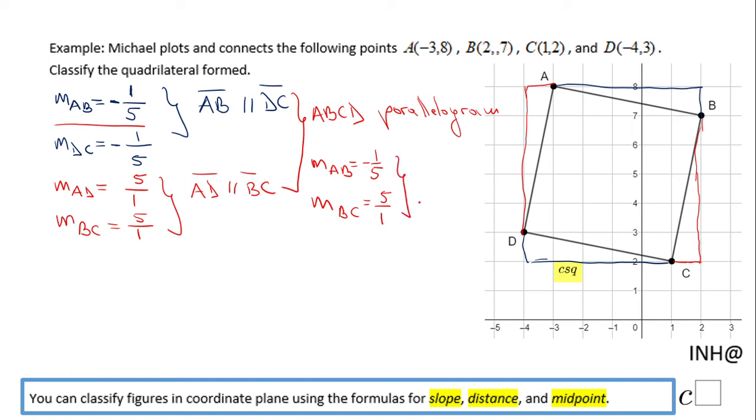If you take a look, these two are negative reciprocals: negative 1 over 5 and 5 over 1. They are negative reciprocals. That means AB is perpendicular to BC, which means this angle here, angle B, is 90 degrees.